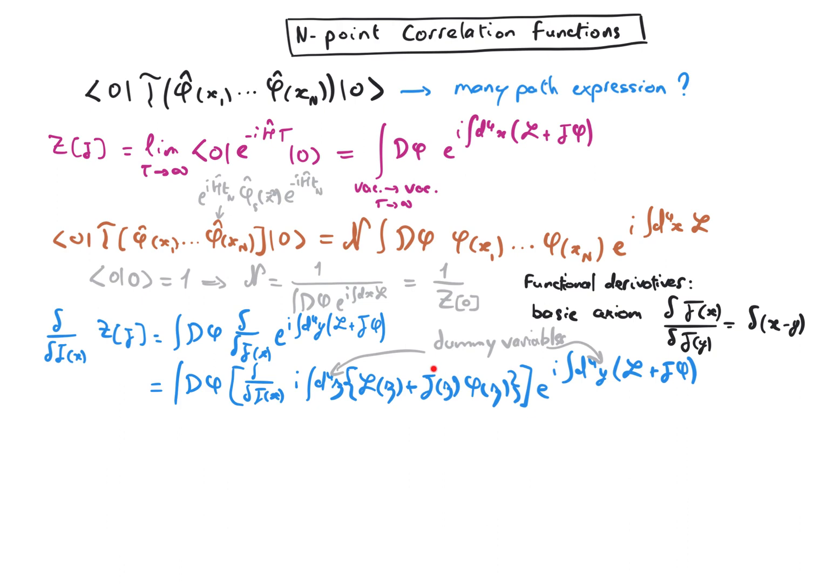The derivative with respect to j for the first term will give us zero because there is no j, and will give us a delta function for the second term according to the basic axiom we use to define the functional derivatives. So we see that if we take j to be zero and up to an i-factor and a normalization we recognize the one point correlation function with only one field in the path integral.